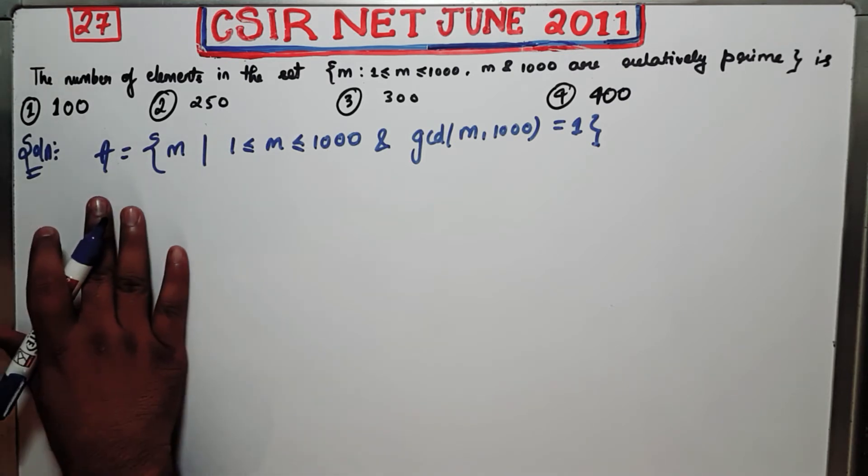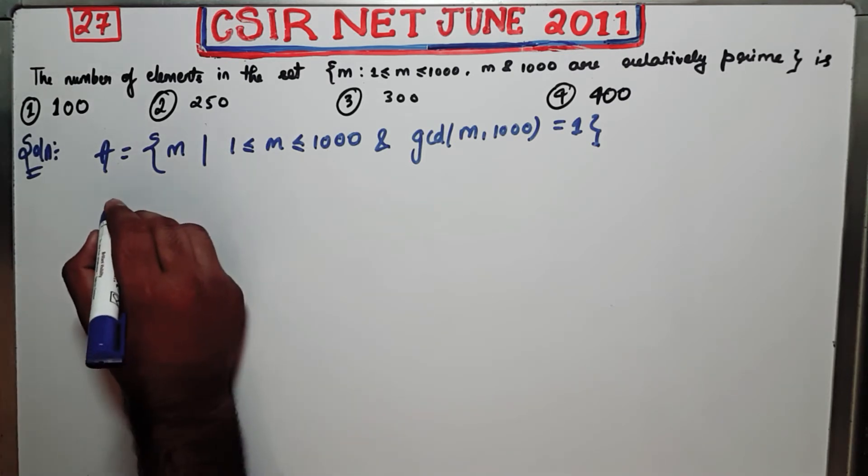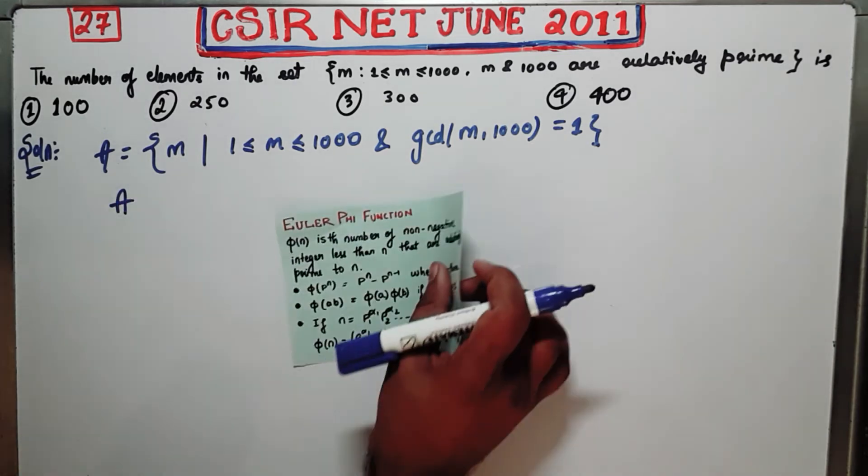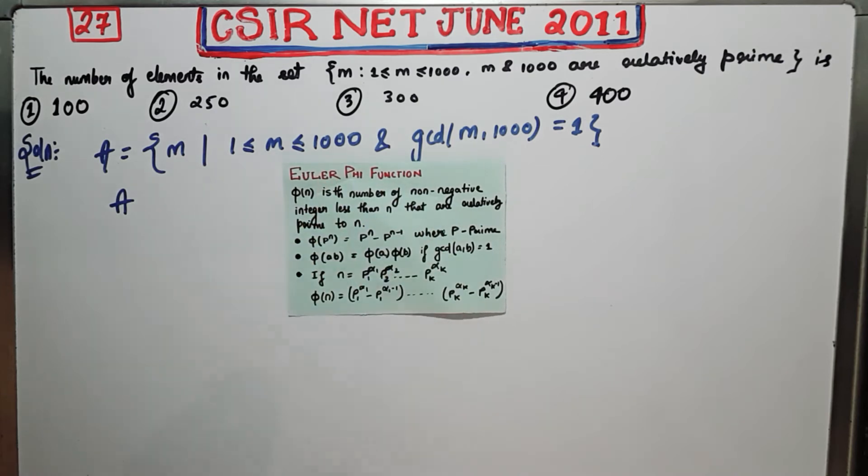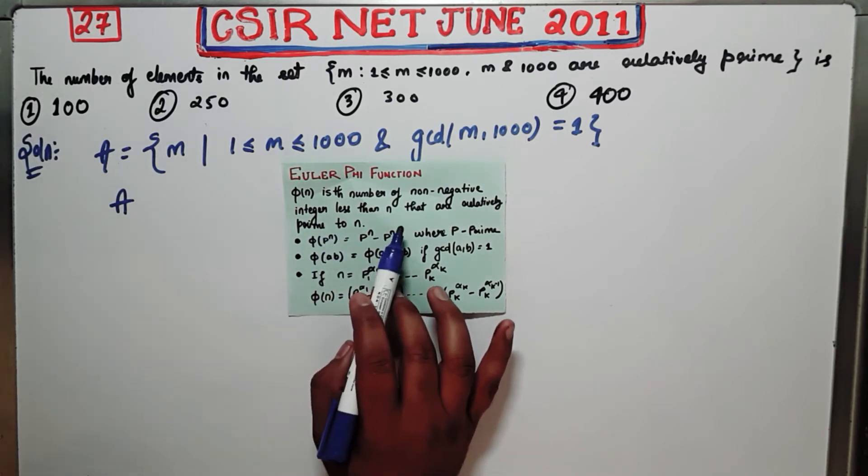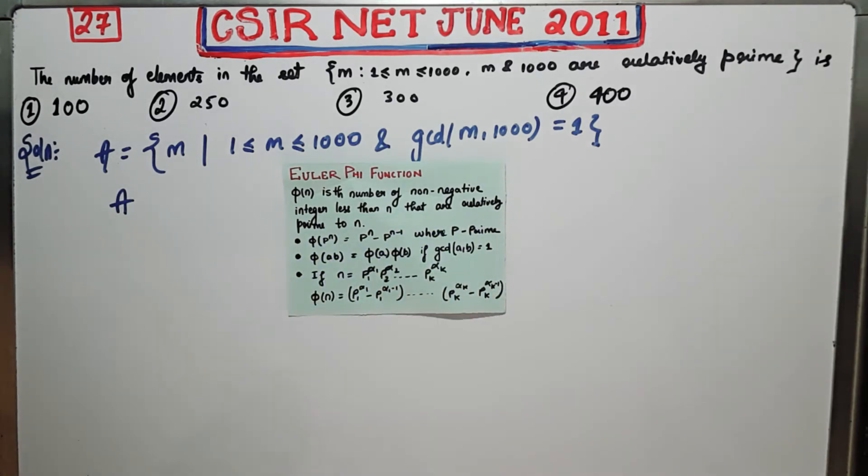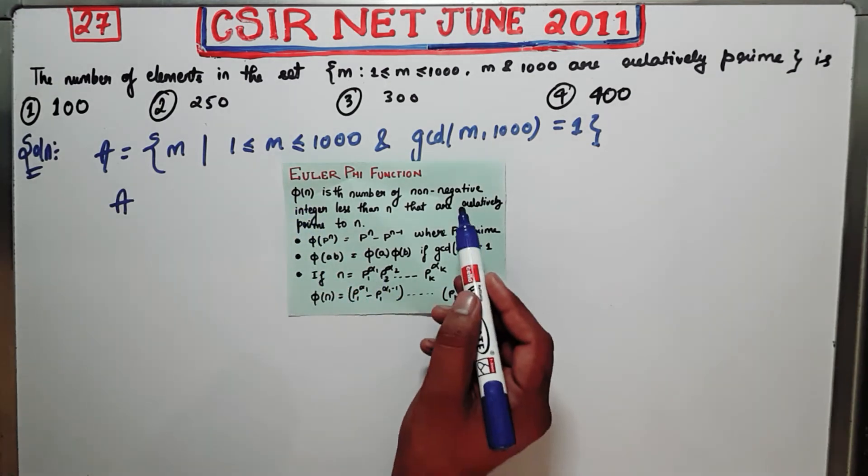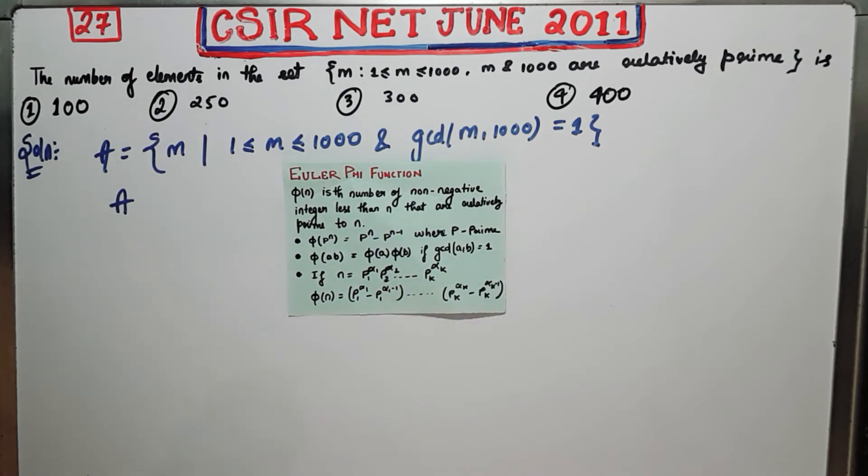Now I am going to show you a function which exactly calculates the cardinality of this kind of set. So this is the function that I am talking about. This function is known as Euler phi function. The definition for Euler phi function says phi n is the number of non-negative integers less than n that are relatively prime to n. That means phi n actually counts the number of non-negative integers which are less than n and also relatively prime to n.